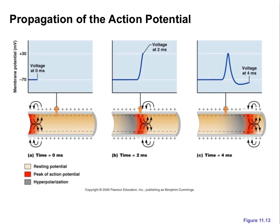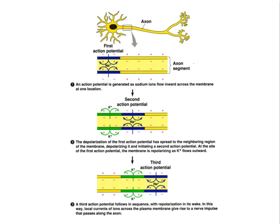Here is another look at the same process. We depolarize the first segment, current spreads and depolarizes the next segment, causing it to reach threshold. At a later time point, the current has moved all the way down and the action potential has spread the full length. Sodium ions move in, depolarization is established, current spreads to depolarize the next segment while the first segment hyperpolarizes as potassium ions leave. Current from the second segment then depolarizes the third, and the action potential is propagated accordingly.